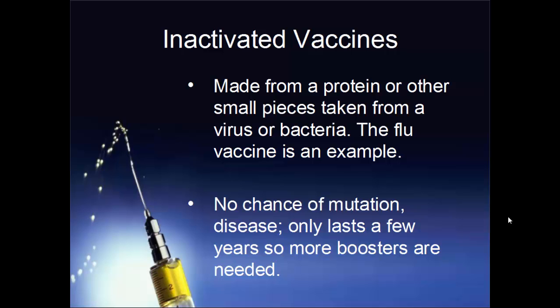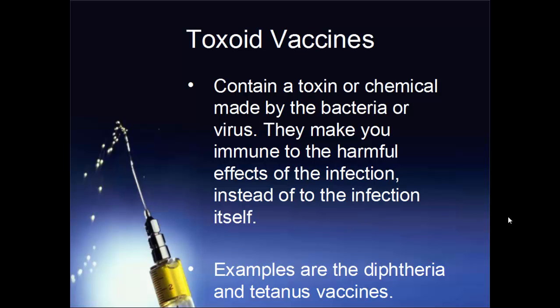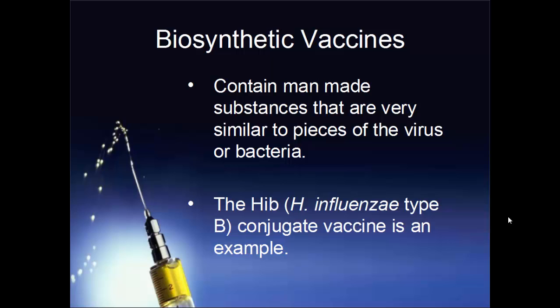Toxoid vaccines contain a toxin or chemical made by the bacterium or virus. These vaccines make you immune to the harmful effects of the infection, not the infection itself — because that's how these bacteria and viruses make you sick. You're not becoming sick because you're infected by them directly; you're becoming sick due to the chemicals they produce once they're inside your body. Common examples are the tetanus and diphtheria vaccines.